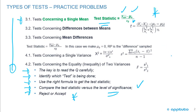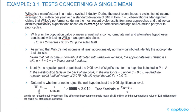The best way to see this is we're going to walk through an example step by step. This is a test concerning a single mean. Wilco is a manufacturer in a mature cyclical industry. During the most recent industry cycle, its net income averaged $30 million per year. So we see an average there, that's going to be our X bar. With a standard deviation of $10 million and n equals six observations.